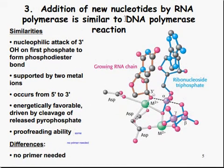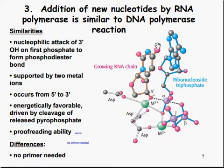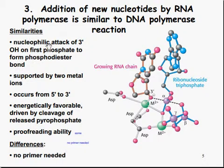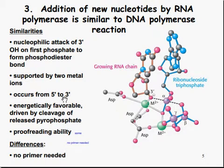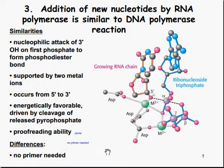Then we see the addition of new nucleotides by RNA polymerase, and it is very similar to the DNA polymerase reaction in regards to how it works. You still see the hand structure. The similarities include a nucleophilic attack of the 3' hydroxyl on the first phosphate to form the phosphodiester bond. It's supported by two metal ions, it occurs in the 5' to 3' direction, it is energetically favorable, it's driven by cleavage of phosphate, it has some proofreading ability, and there is no primer needed for RNA polymerase.